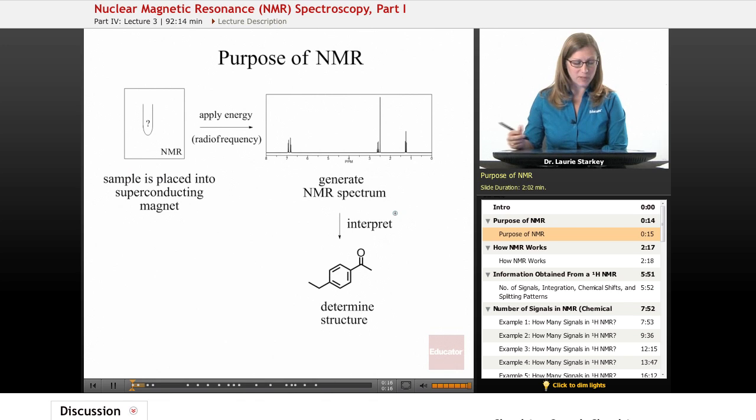Now the purpose of an NMR is we take an unknown sample, we place it in an NMR tube, and it's placed inside of a superconducting magnet, a very, very strong, powerful magnet that needs to be cooled to very low temperatures in order to have its properties. We're going to apply some energy, so like all spectroscopy, spectroscopic methods, we're going to analyze our sample by radiating with some kind of energy and then observing how it interacts with that energy.